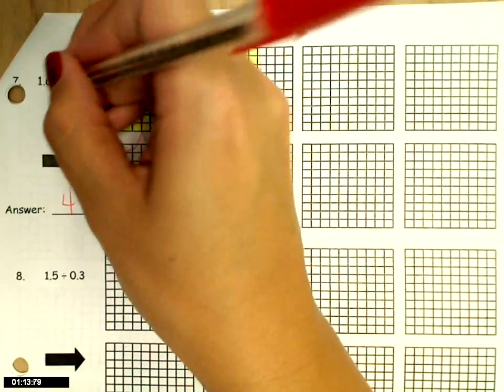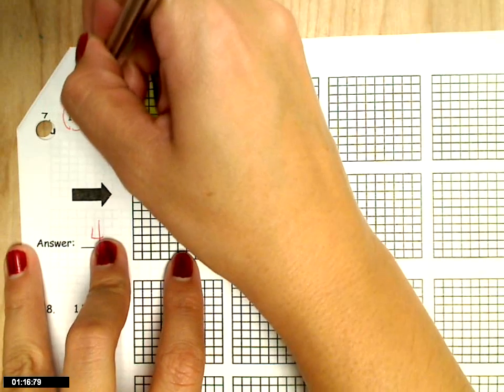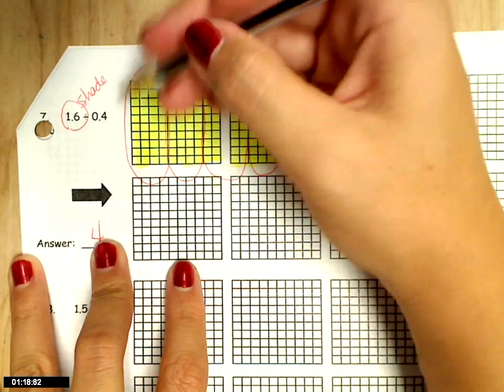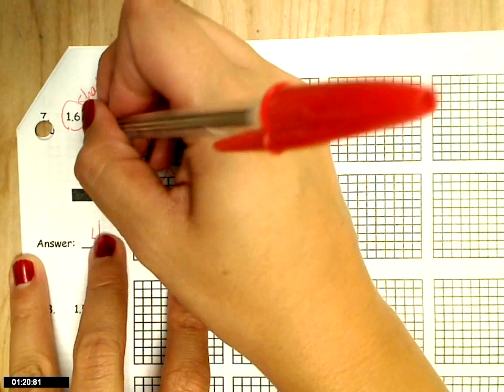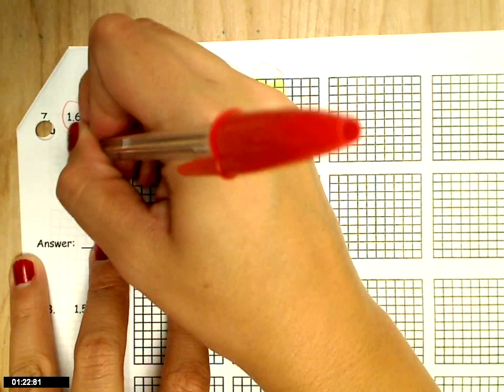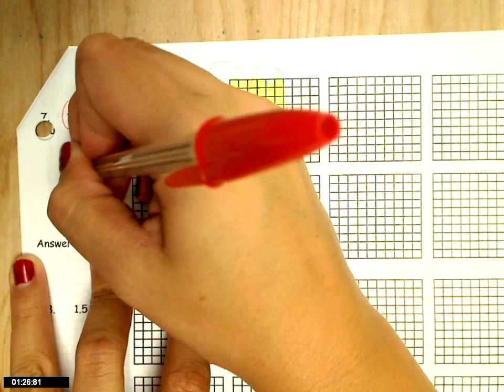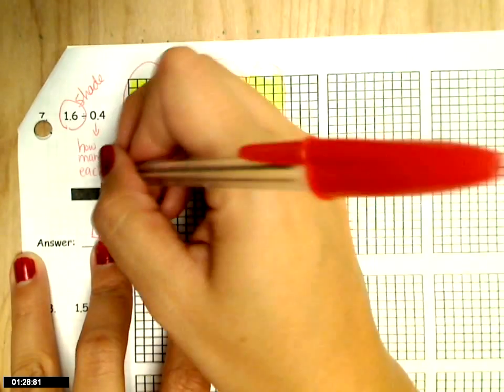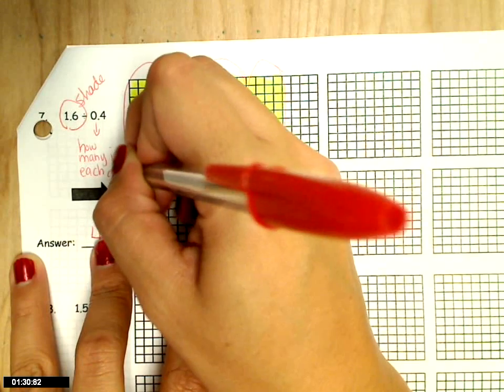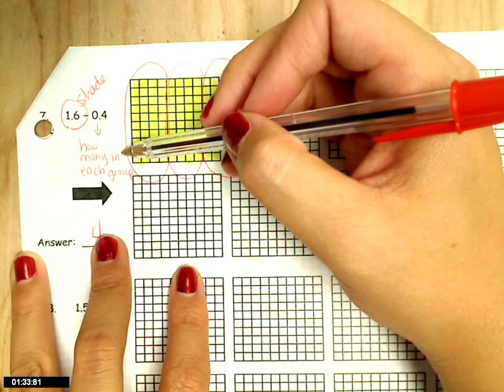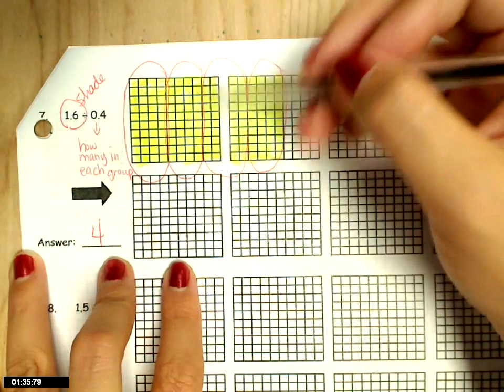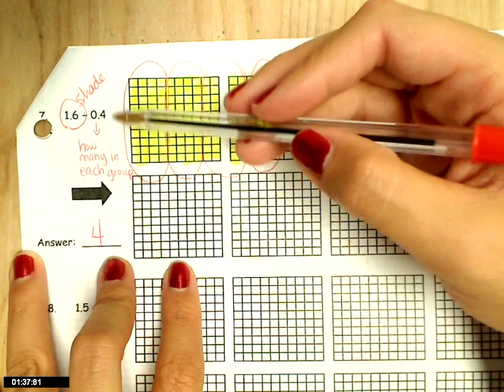So again, this number is the amount that I shade. This number, because it's less than 1, tells me how many in each group. And go ahead and write this on your paper so you don't forget. If it's a number less than 1, it's how many are in each group. You're going to make loops around your 4 tenths.